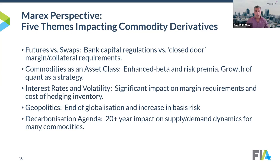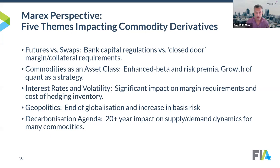The second big theme is commodities as an asset class. Beyond the producer-consumers who are always there in the physical world, who are the incremental derivative participants and what is their profile? That's changed a lot over time. The third theme is interest rate volatility — not specific to commodities, but it has had a very significant impact. The typical commodity producer is not a luxury goods company — most commodities are scale-driven with relatively low operating margins.